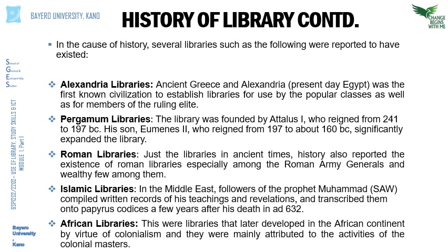It then occurred to man that there was a need to document his activities beyond the human brain. On this basis, man developed several tools upon which activities could be documented. Notable among them were writing materials such as stones — man wrote on stones in the past — others wrote on the walls of caves, several others wrote on the bark of trees, and later across different civilizations, vellum, parchment, clay tablets, and papyrus were also developed and used.